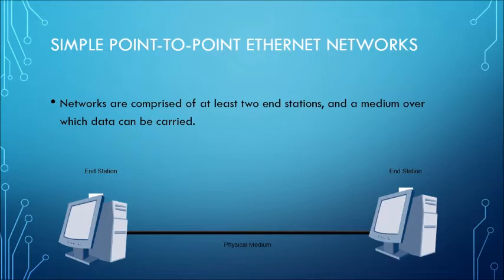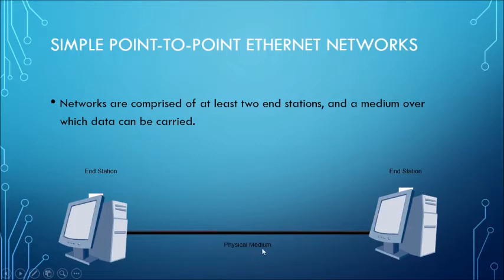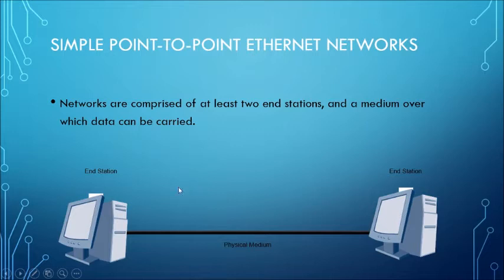So what is an internet network? Networks are comprised of at least two end stations and a media over which data can travel. As you can see in this picture, there are two systems connected with a physical medium. This physical medium is of many types — wireless, cable including coaxial wires, and fiber optics — by which the two systems can transmit information to each other. For each applicable cable, the cost, distance, and transmission capability are also noted.